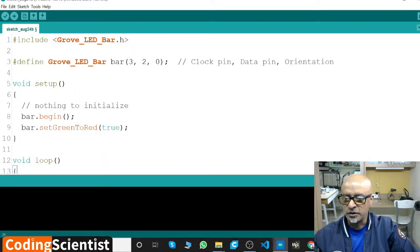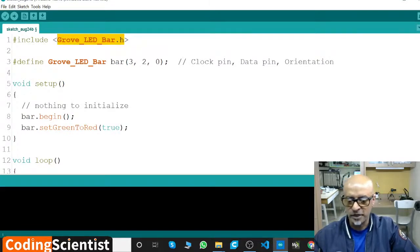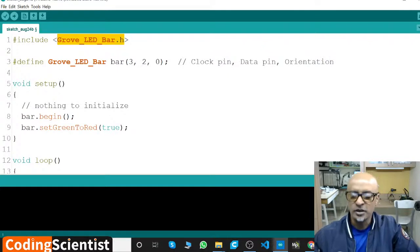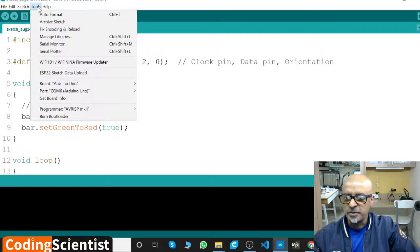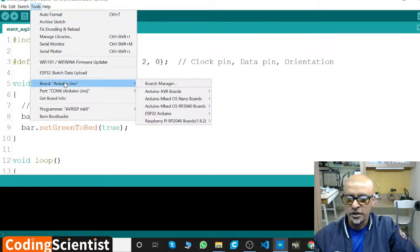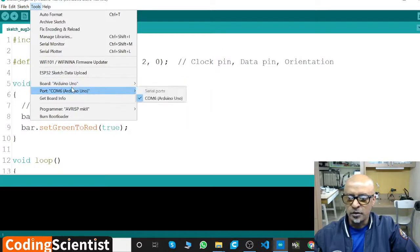Once you paste it, there you go. As soon as you put it, your library gets recognized because I have already installed this library. You need to put it inside the library folder of the Arduino path. Once you are done with copy-paste, go to Tools, Arduino Uno, go to Board.